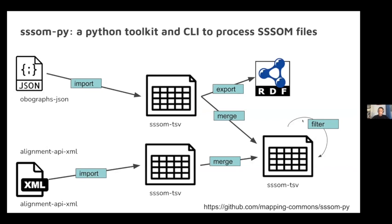We also developed a Python toolkit that does things like translating files from OBO graphs or the Alignment API XML into SSSOM. You can, for example, take Agreement Maker Light mappings or automated mappings from ontology evaluation initiatives, translate them into SSSOM, and then export them into JSON-LD, RDF, and so on, as well as merge mapping sets together. This is very early alpha, but we hope to improve it this year.